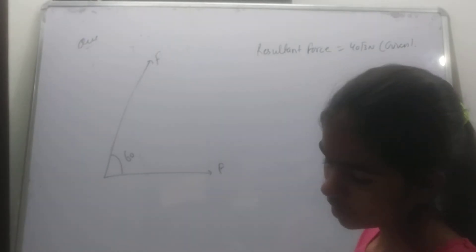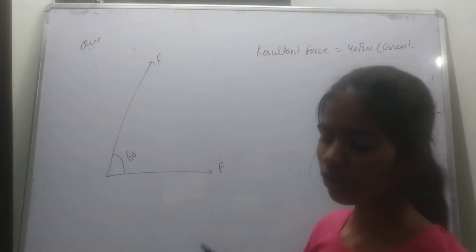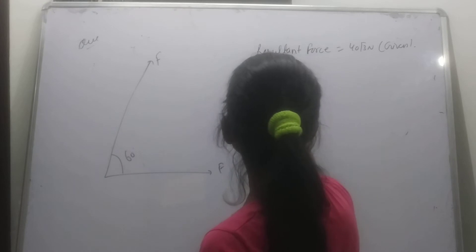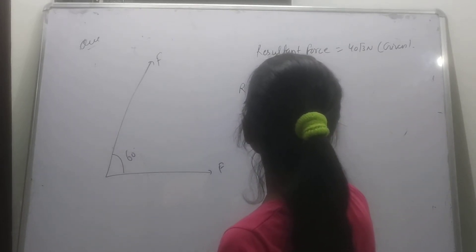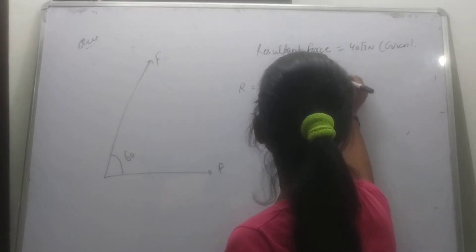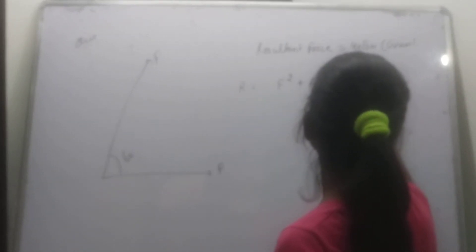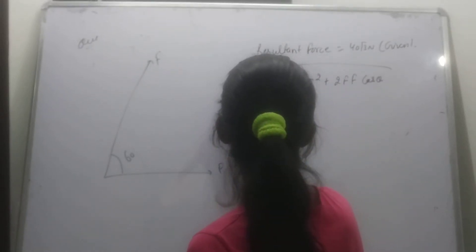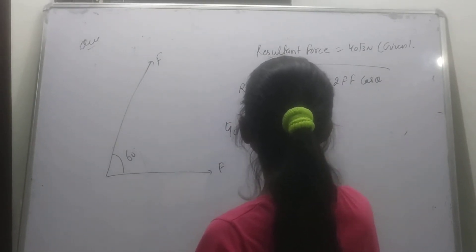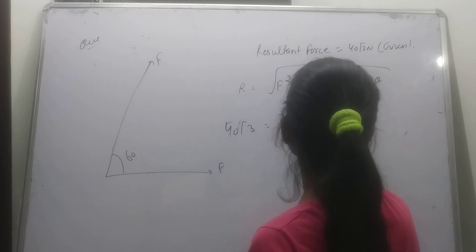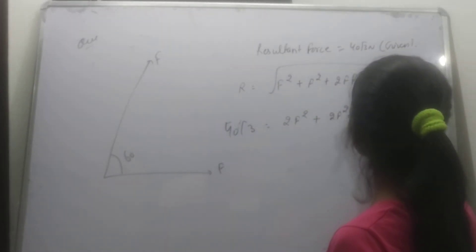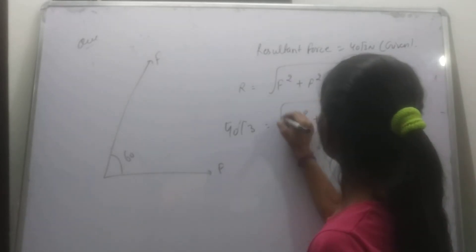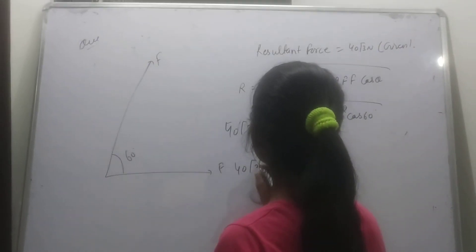The resultant R is equal to 40√3 N. Using the formula R = √(F² + F² + 2F²cosθ), with θ = 60°, we substitute to solve for F.